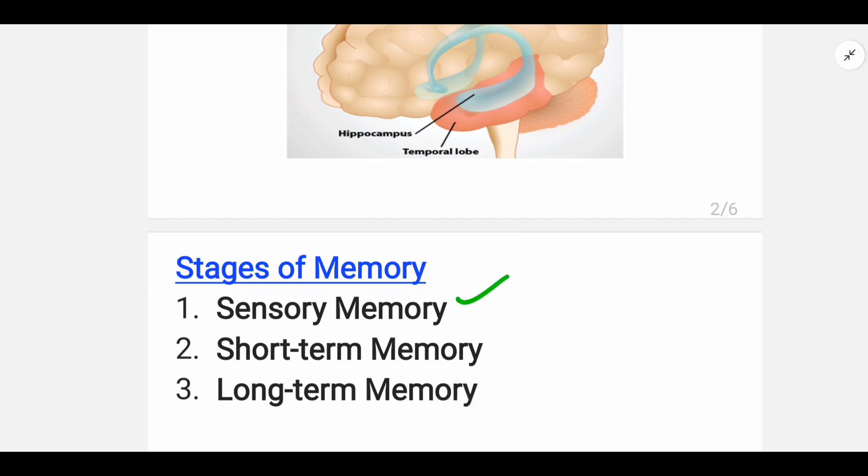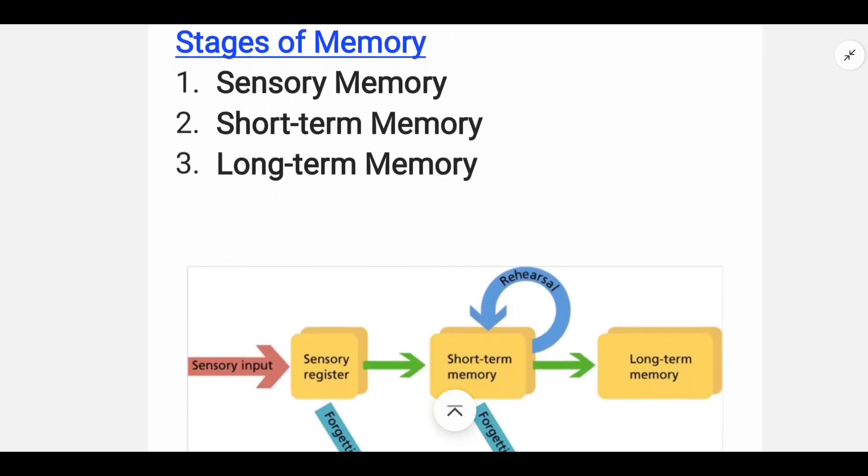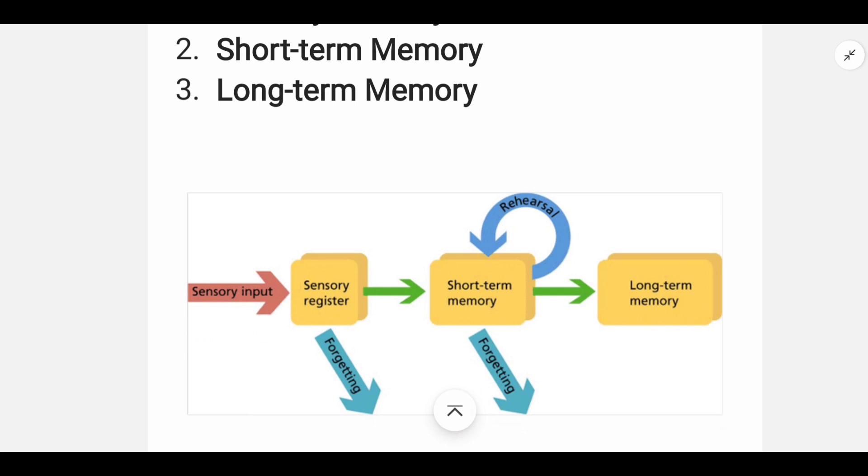Basically, memory goes through three stages. First is sensory memory, second is short-term memory, and third is long-term memory. If you have watched the information processing videos or read the topic, you would know how our memory is processed. First, through our five senses, sensory input happens, information input happens. Then in the sensory register, whatever information is useful for us goes to short-term memory. Otherwise we forget it if it's not useful.